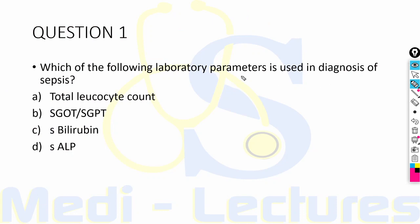Now, coming to the questions of this episode. This episode will have two questions. First question: which of the following laboratory parameters is used in diagnosis of sepsis? Total leukocyte count, SGOT and SGPT, serum bilirubin, or serum alkaline phosphatase?